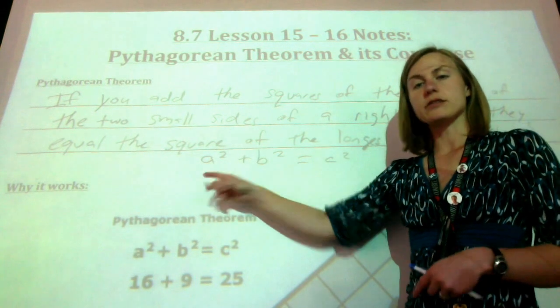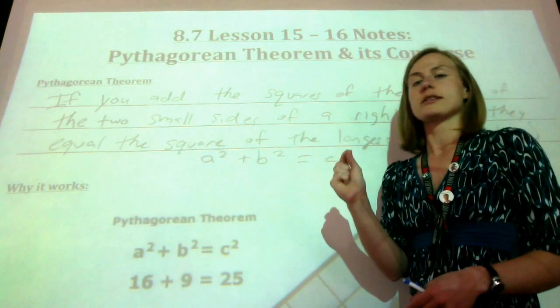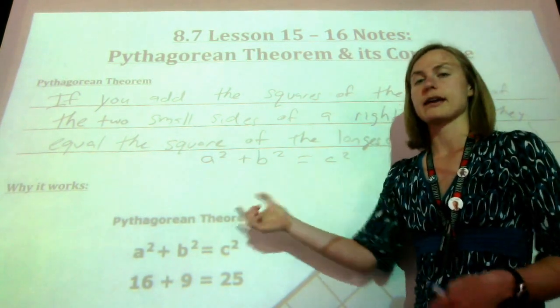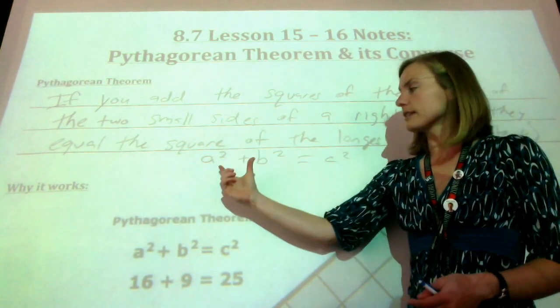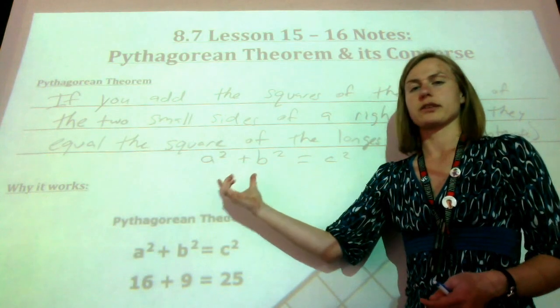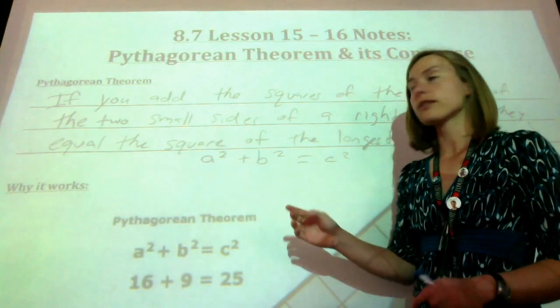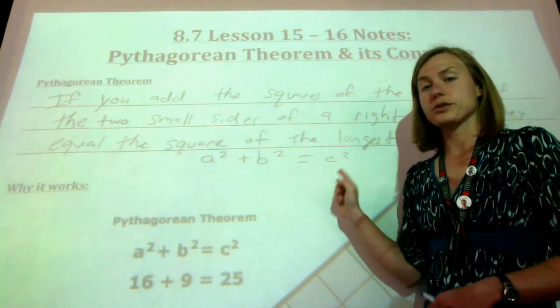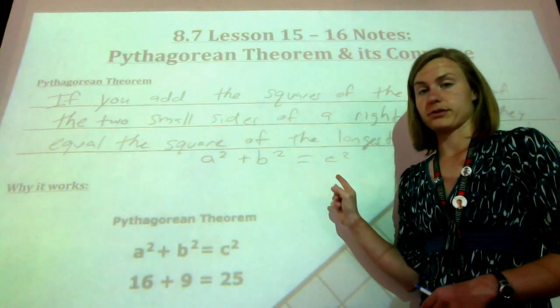I normally like a to be the smallest side and b to be the second smallest side, but technically they can be switched — it really doesn't matter. The important thing is that c is always your hypotenuse.